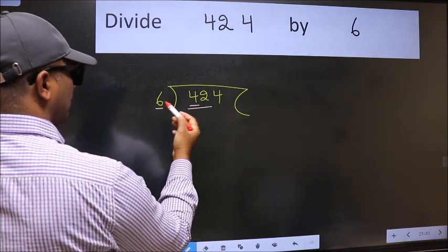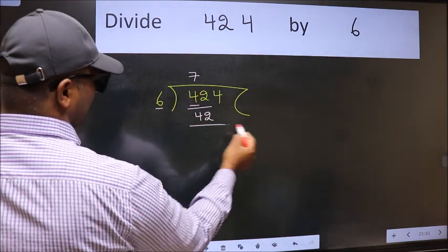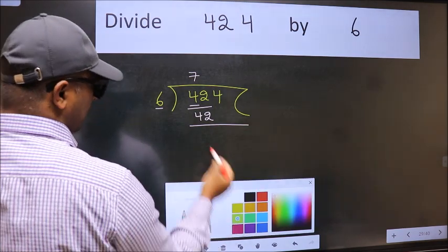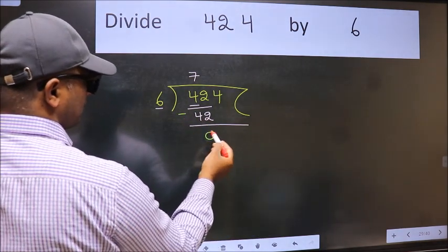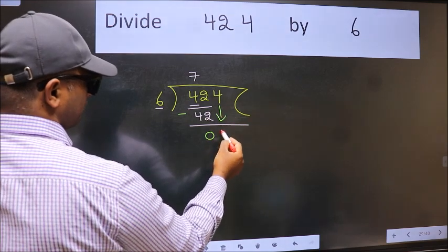When do we get 42 in 6 table? 6 times 7 is 42. Now we should subtract. We get 0. After this, bring down the beside number. So 4 down.